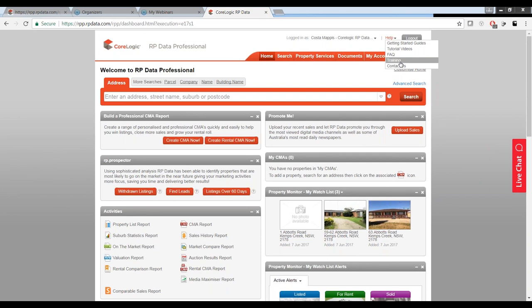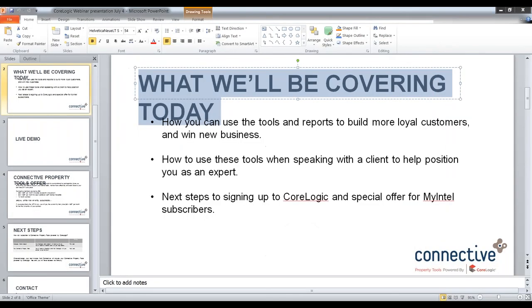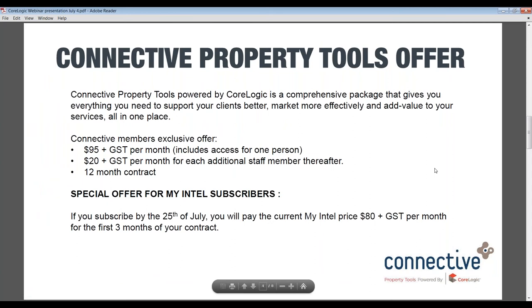Thank you Kosta for this great demonstration — it is a really amazing tool. I'm Geraldine, Marketing Manager at Connective. Quickly, I wanted to talk about the offer for you guys. It's a really simple, exclusive offer for Connective members: $95 plus GST per month, with national data and access for one person. If you want additional users, it will be $20 plus GST per month. This will be on a 12-month contract.